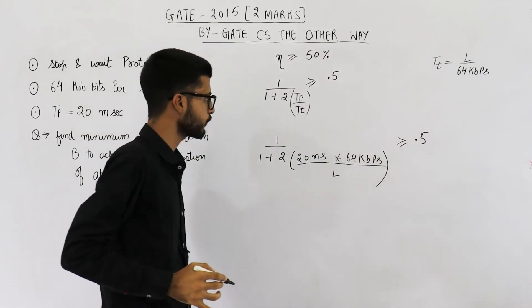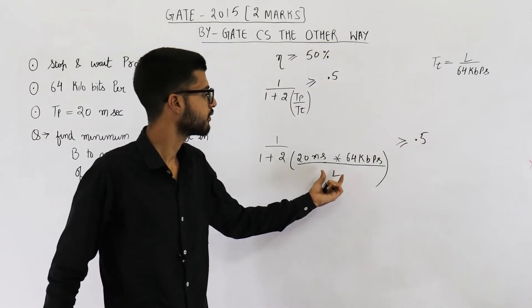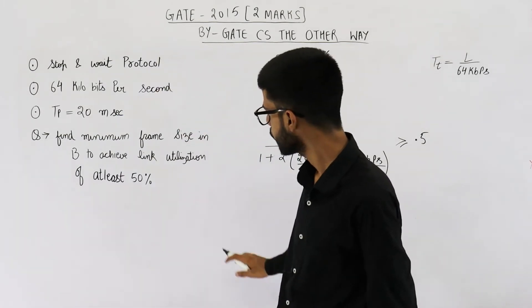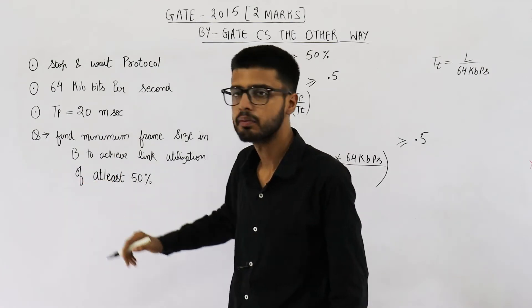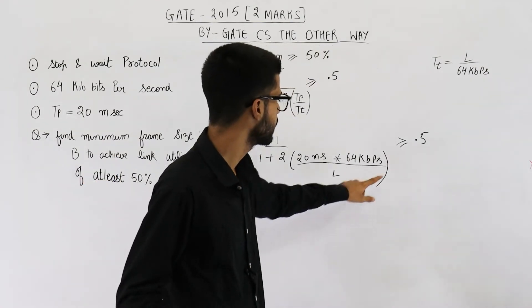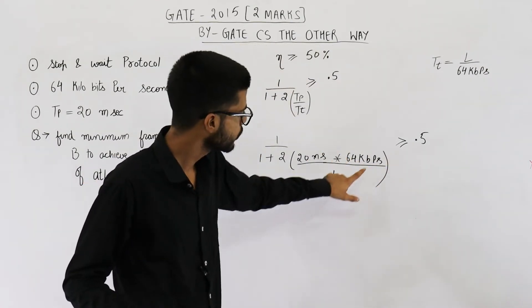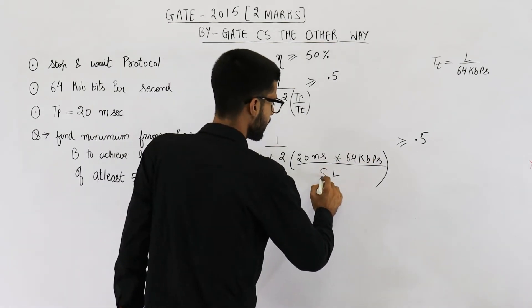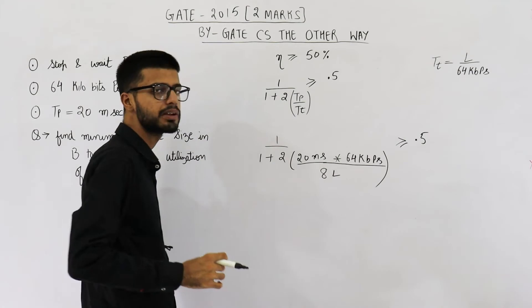Now from here you can easily determine the value of L that is the minimum frame size. We want frame size in bytes. But here the units are bits. So convert these bits into bytes. We can do so by dividing 64 kbps by 8.